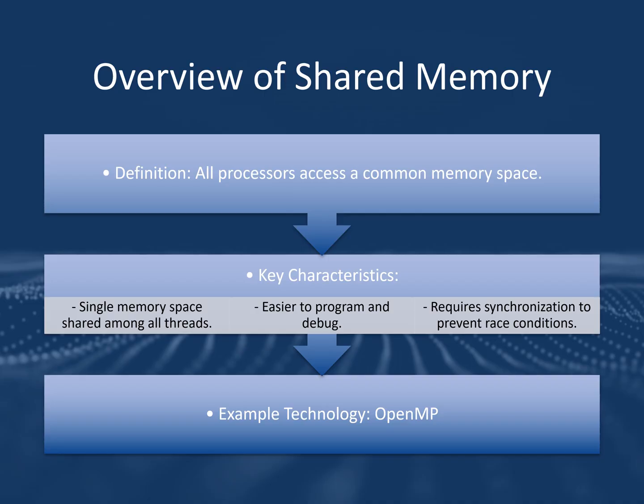Let's begin with shared memory. In a shared memory system, all processors have access to the same memory space. This means they can easily share data without the need for explicit communication. Shared memory systems are typically fast and work well for small-scale setups. However, they are limited when scaling to larger systems.